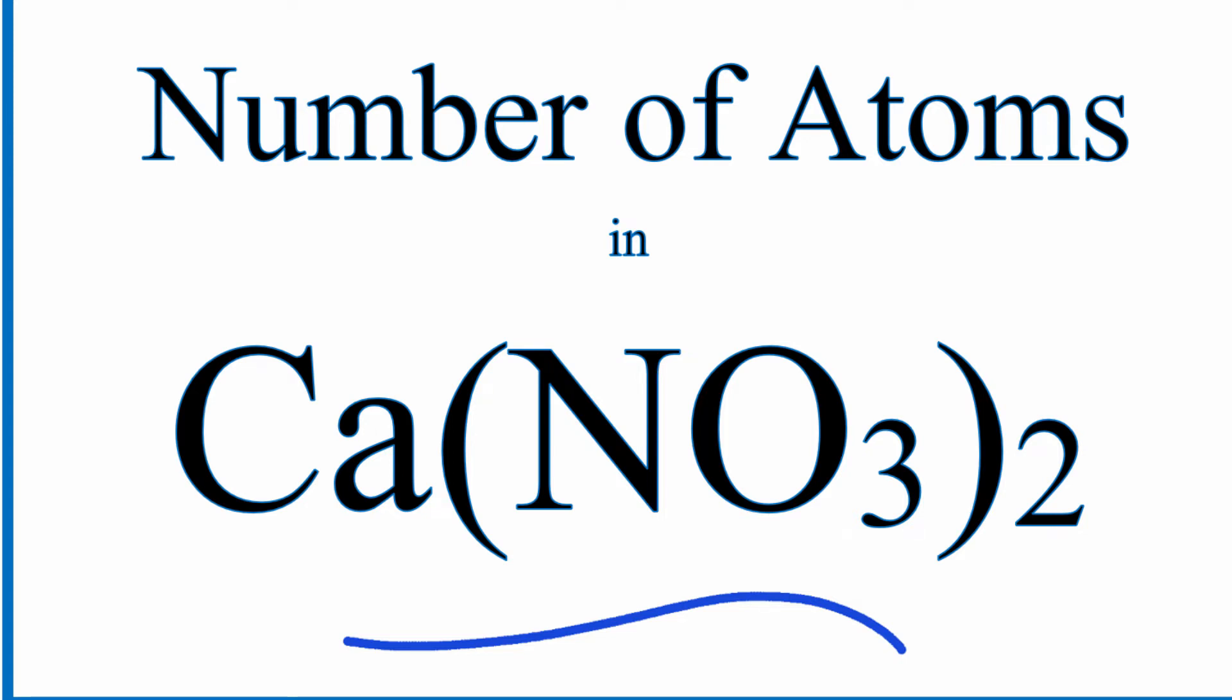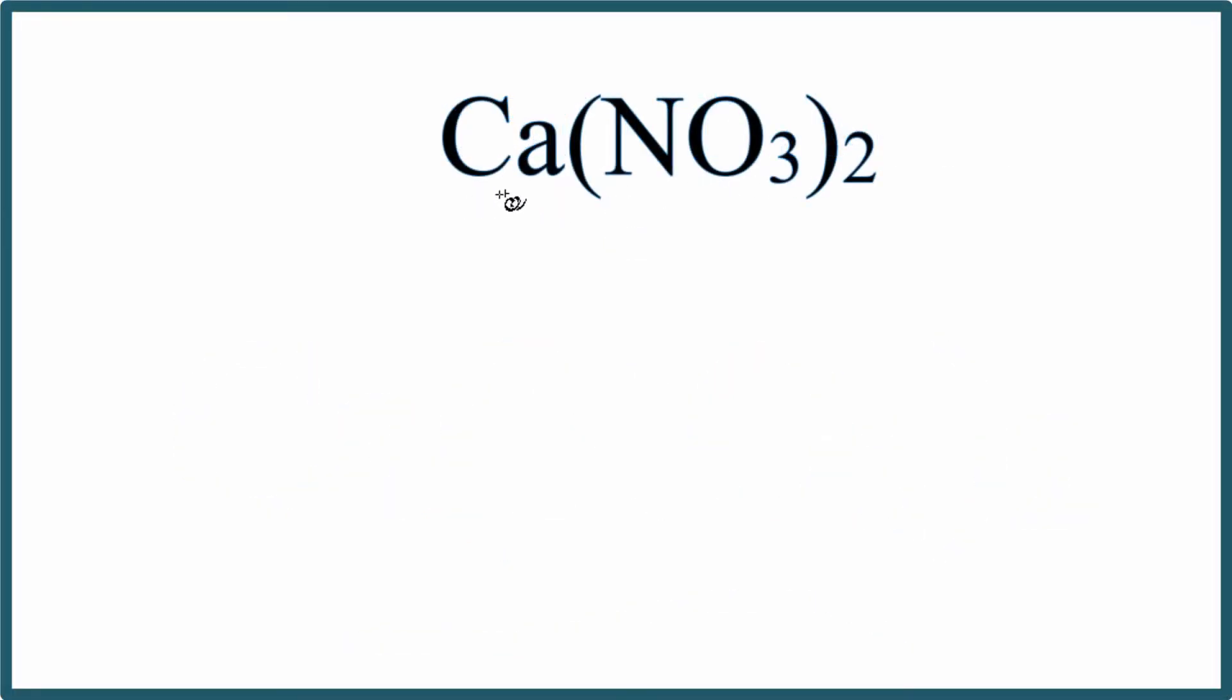To find the number of atoms in Ca(NO₃)₂, that's calcium nitrate, let's look at each atom.